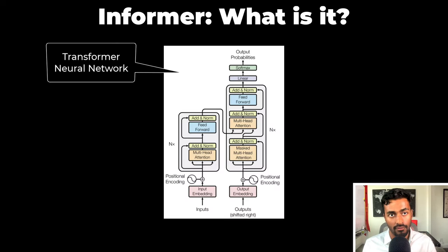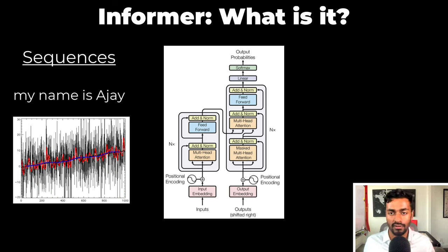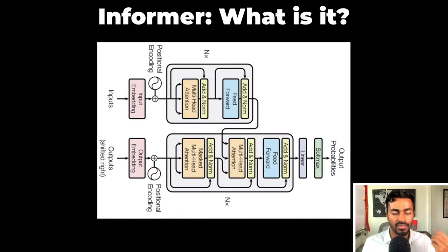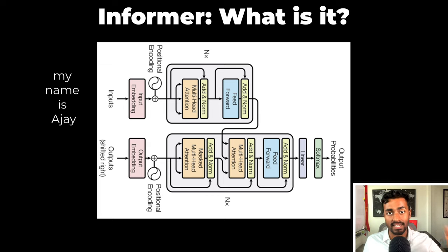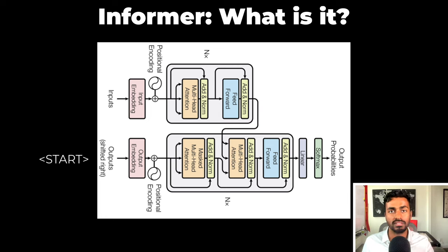This is the Transformer Neural Network. It has an encoder and a decoder, and it was originally designed to solve sequence-to-sequence problems. Sequence is data with a defined ordering, like the words in a sentence or time series data. Originally it was implemented with language translation in mind. So for translating from English to French, during the forward pass we pass in English words in parallel to the encoder, each word is encoded into a vector representation, and these are passed to the decoder along with a start token. The decoder then generates a French translation one word at a time.